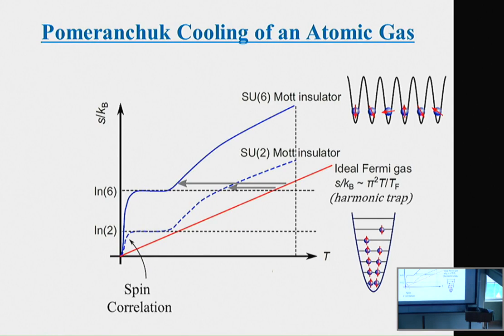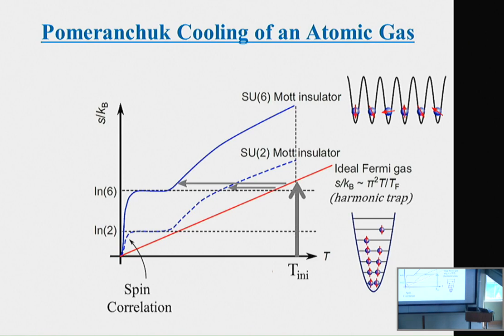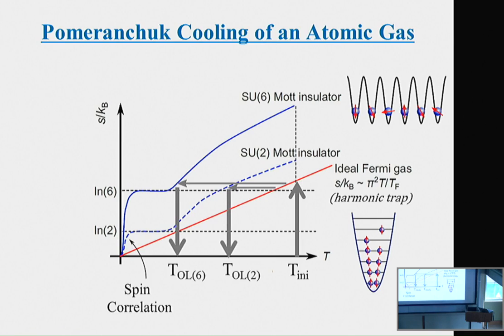This can be understood with the entropy-versus-temperature diagram. The red curve corresponds to atoms in a harmonic trap before loading into the optical lattice, and blue curves correspond to atoms in the optical lattice — one for SU6 and one for SU2. Starting from the same initial temperature in the harmonic trap, after adiabatic loading into the optical lattice, lower temperature is achieved in SU6 than in SU2.